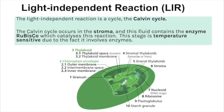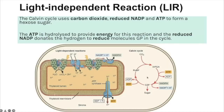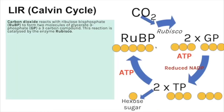ATP and reduced NADP are used in the light-independent reactions, also known as the Calvin cycle, which occurs in the stroma. The key enzyme is rubisco, so this stage is temperature-sensitive but does not require light energy. The Calvin cycle uses carbon dioxide as well as the two products from the light-dependent reaction to create a hexose sugar. The ATP is hydrolyzed to provide energy, and the reduced NADP donates hydrogen to reduce GP within the cycle.